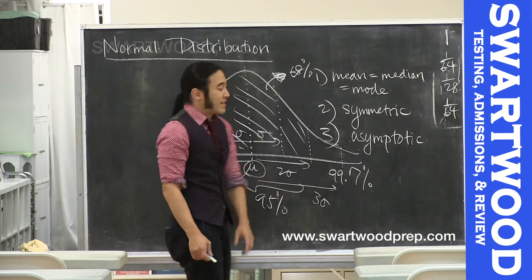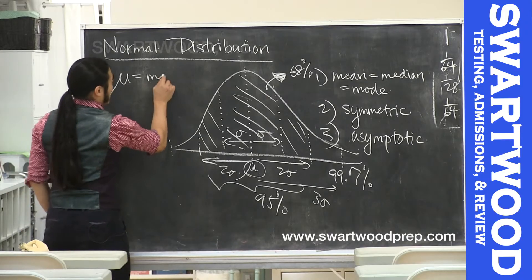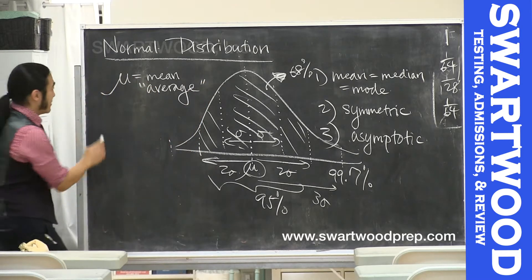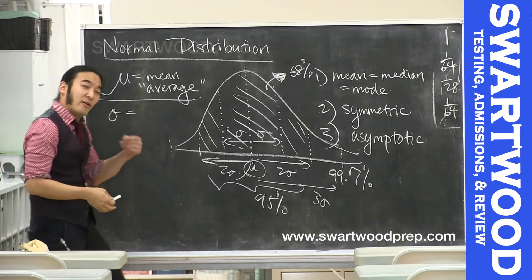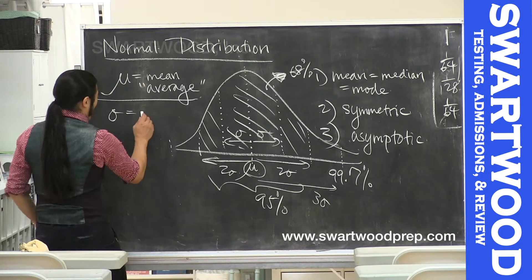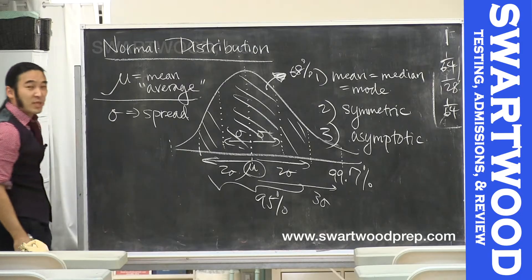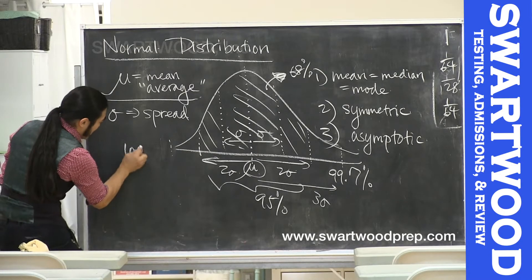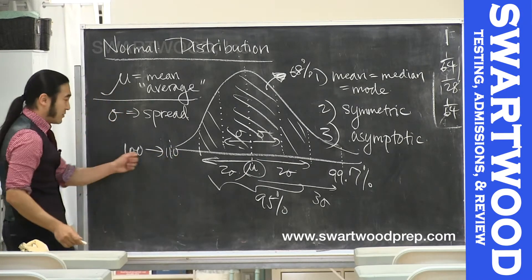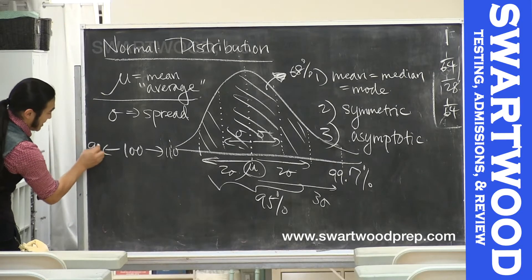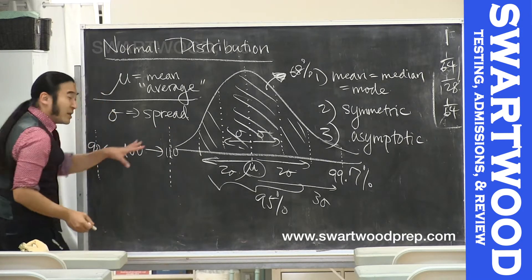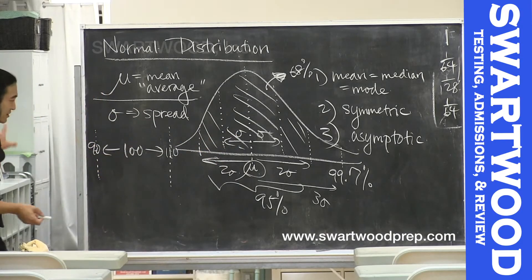I don't want to spend too much time on this since you saw it on your last midterm, but the mean represents the population average in the standard sense of the word. Sigma, the standard deviation, represents how far from the average a person is, on average — it's a measure of spread. For example, if the mean is 100 and the standard deviation is 10, it's not unusual to find someone between 90 and 110.